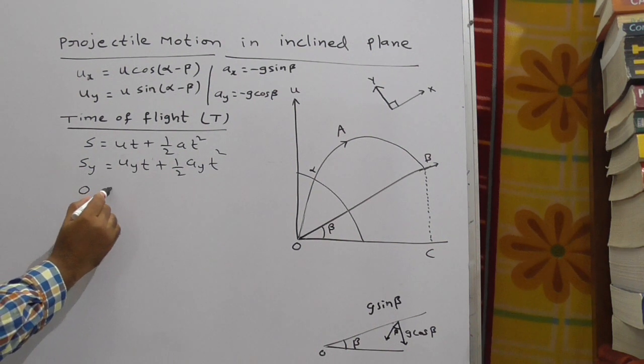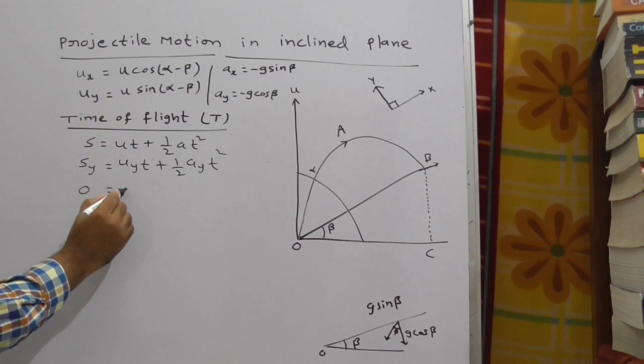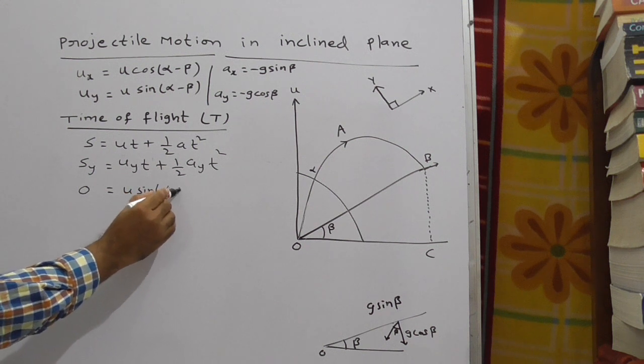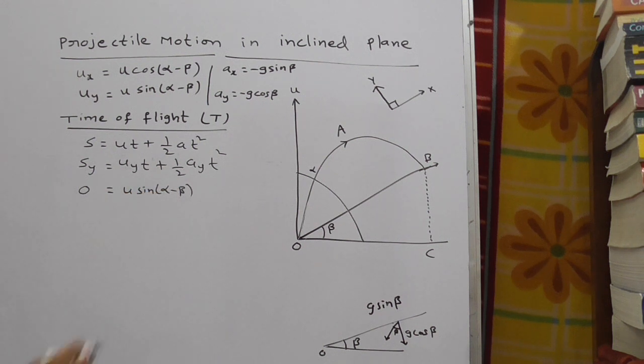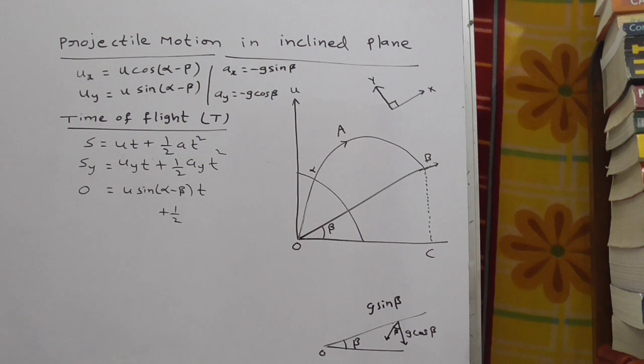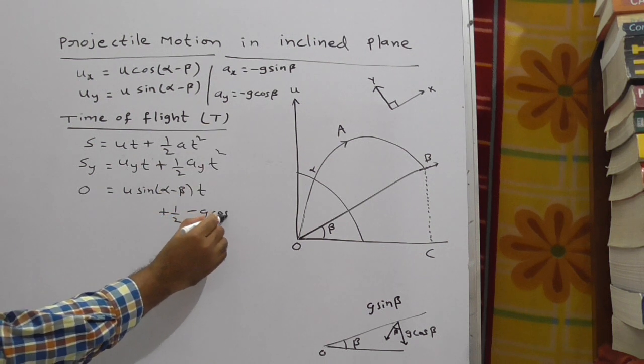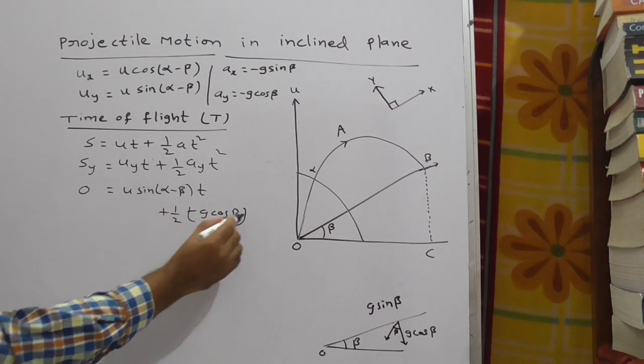Now, uy, substitute the value here. What is uy? u sin(alpha minus beta) into t plus 1 by 2 ay. What is ay? Minus g cos beta. Minus g cos beta t square.